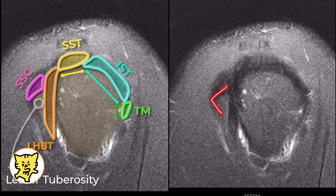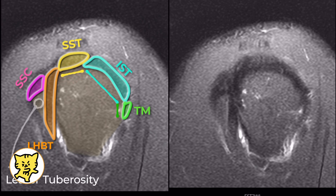Now, if you look behind the long head of the biceps tendon, there's the greater tuberosity, which is divided into three main areas: the superior facet, the middle facet, and the inferior facet.